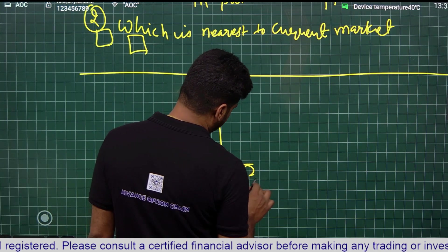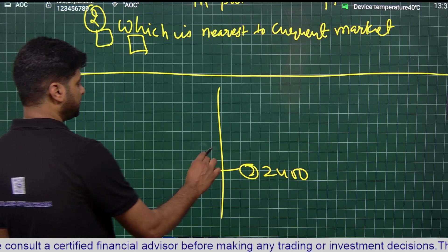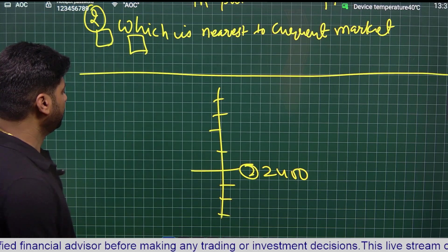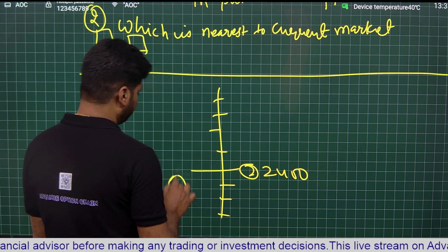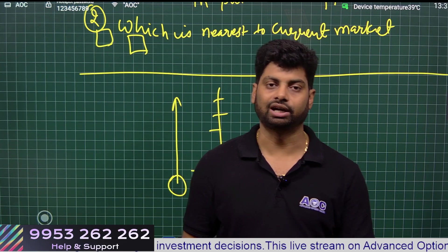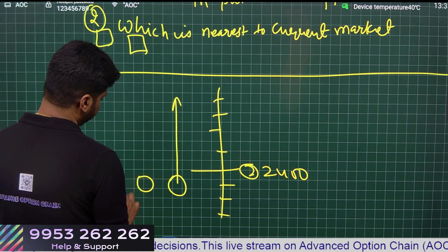Suppose market is at 2400, these are the strike prices. We will start looking from one in the money towards OTM for the call side, that is resistance side. We will search for the maximum numbers for volume, OI, and OI change.